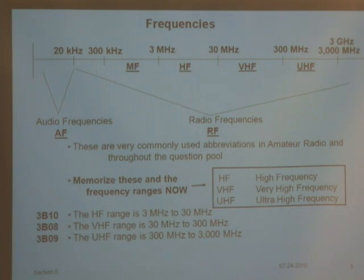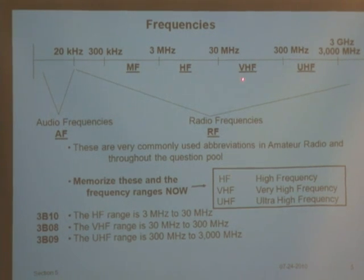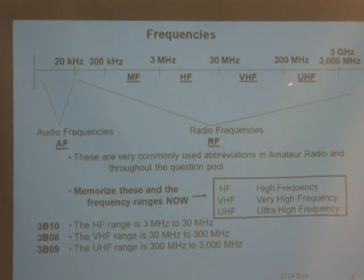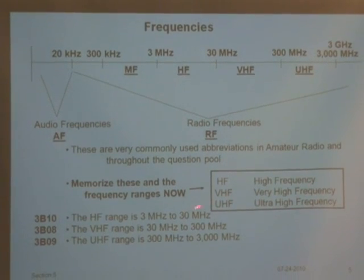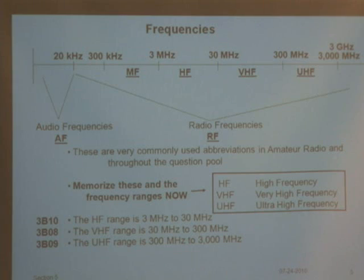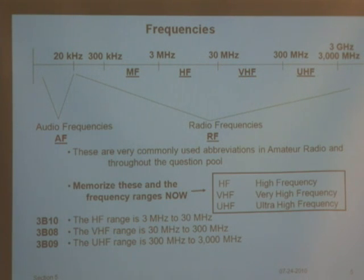The popular frequencies we use are in the HF range, the VHF range, and the UHF range. Those letters stand for high frequency, very high frequency, and ultra high frequency. The questions in the pool will start referring to frequencies by their range, making the assumption that when they say VHF, you know it's between 30 and 300 megahertz.